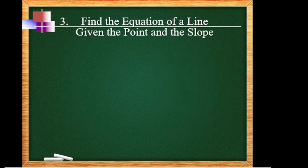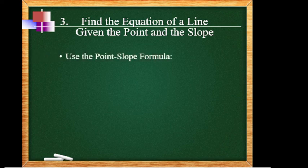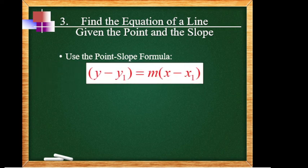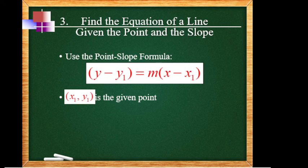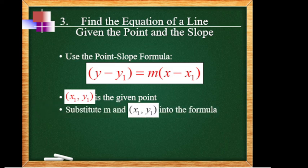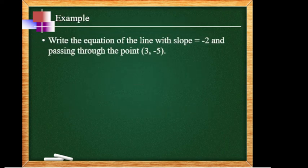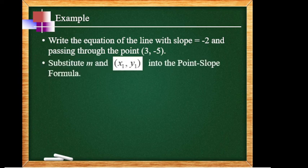Method 3: find the equations of the line given a point and the slope. We use the point-slope formula: y minus y-sub-1 equals m times open parenthesis x minus x-sub-1. Here, x-sub-1 and y-sub-1 are the given point on the line. Then substitute the slope and the point into the formula. Example: write the equation of the line with slope negative 2 and passing through the point (3, negative 5). The slope is negative 2, x-sub-1 is 3, and y-sub-1 is negative 5.